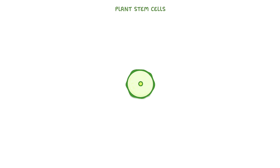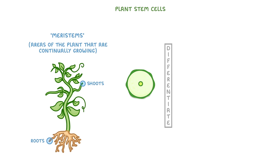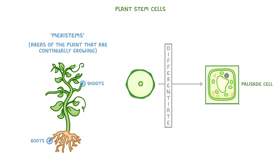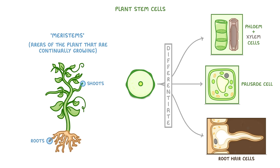Plant stem cells are found in plant tissues called meristems, which are found in areas of the plant that are continually growing, like the very tips of the roots and shoots. As the plant grows, these unspecialized stem cells will differentiate into all of the cells and tissues that the plant needs, like the palisade cells that do photosynthesis, phloem and xylem cells that transport sugars and water, or root hair cells that absorb water and minerals.